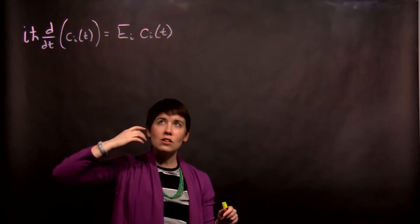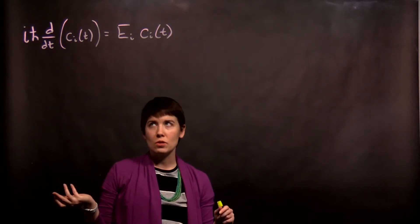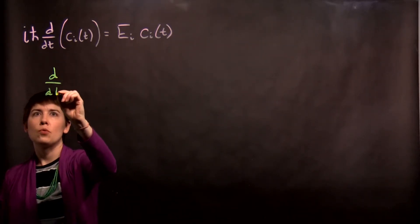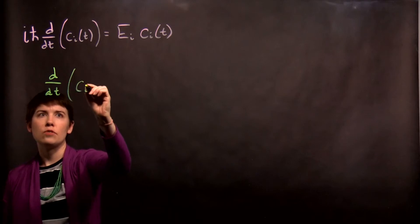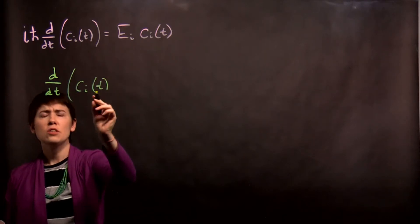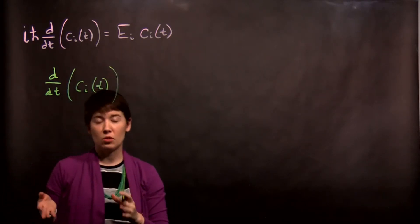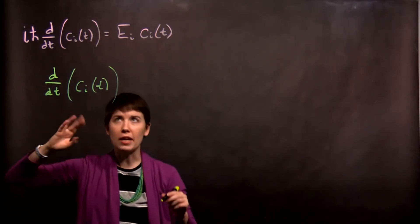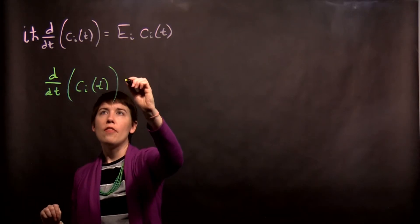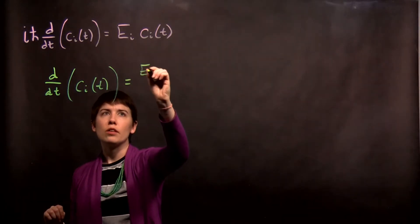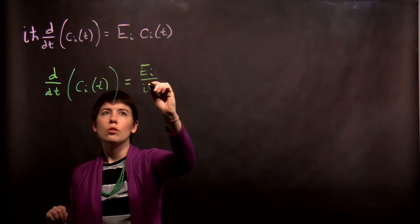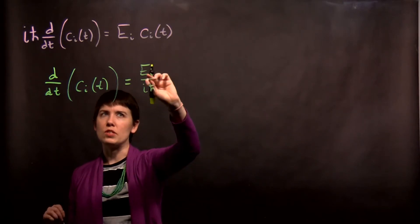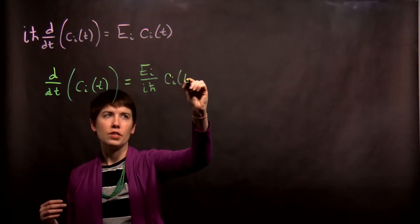We can rearrange this ever so slightly — just dividing out i h-bar. So we are left with d/dt of c sub i. This is just to say it's a specific one because in the summation we're summing over n, so if you want to call this c sub k, that's completely equivalent. Then over here we'd be left with e to the i over i h.